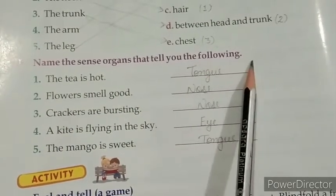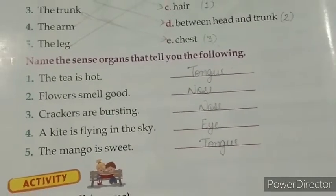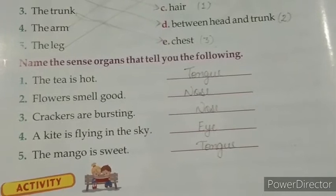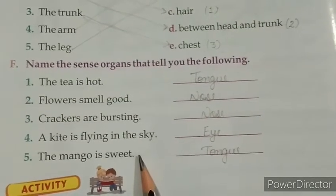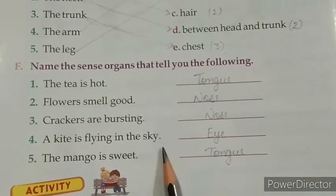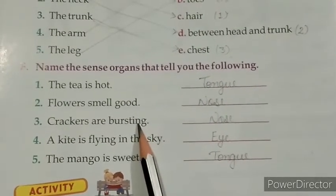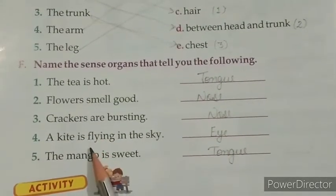Now come on to your next question. Question F: Name the sense organs that tell you the following. Here we have some activities. We have to write the name of the organ that helps in these activities — write the organ name on the given line.